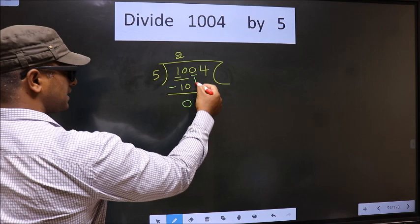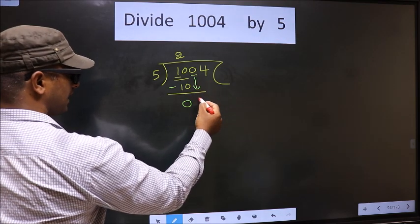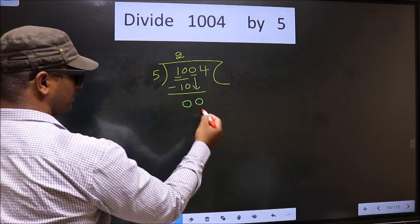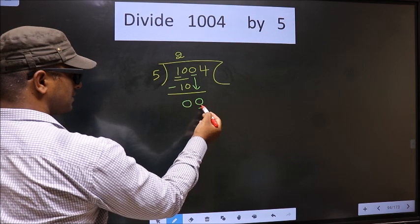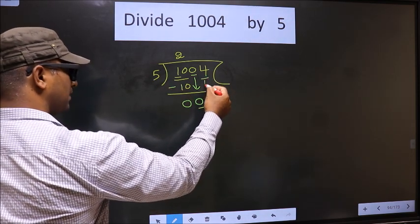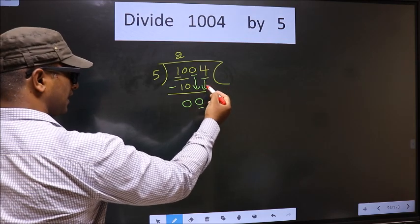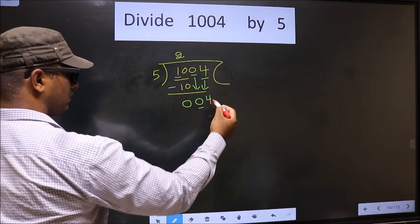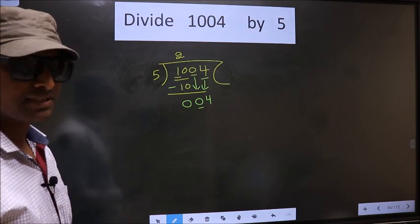Now you bring down the next number. That is 0 down. Here we have 0. 0 is smaller than 5, so we need to bring the other number also down. The other number is 4 down.